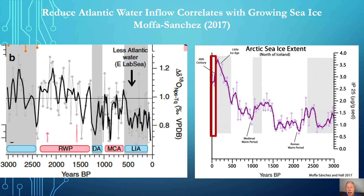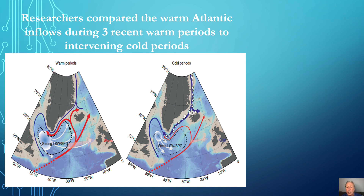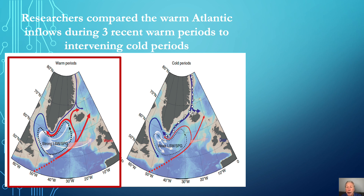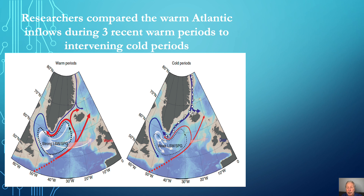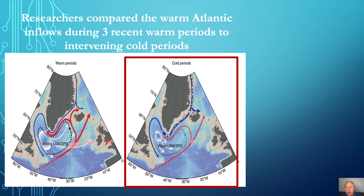When the Little Ice Age ended around the 1850s, inflows increased up through the present times, and sea ice declined, but not to the low extent of the Roman or Medieval Warm Periods. Researchers also compared the warm Atlantic inflows during three recent warm periods to the intervening cold periods. Their results found a strong relationship between increasing warm inflows and decreasing sea ice, and during the cold periods, inflows decreased and sea ice increased.